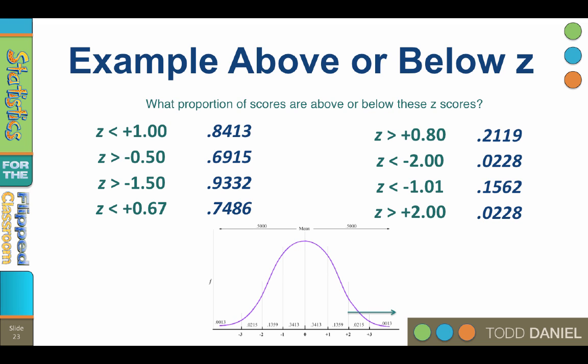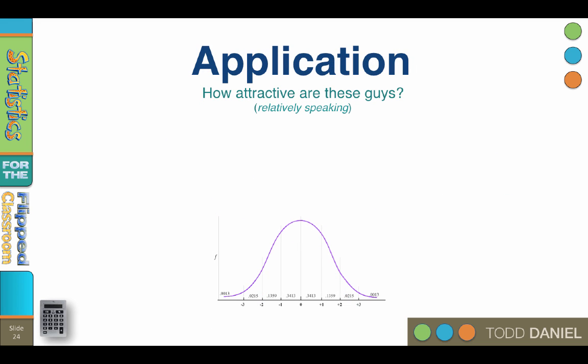We can even apply these skills to our example about the three guys who took the attractiveness test. And of course a proportion can be converted to a percentage by moving the decimal two places to the right.